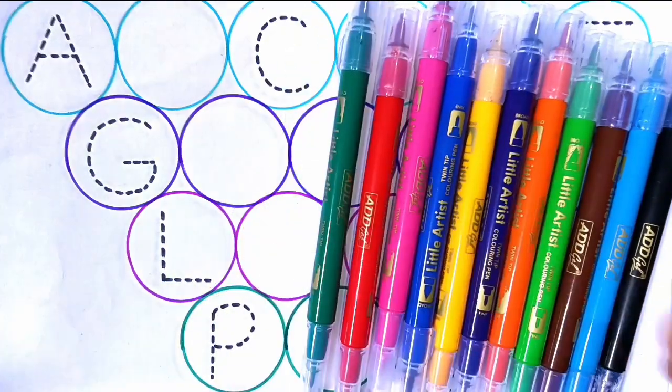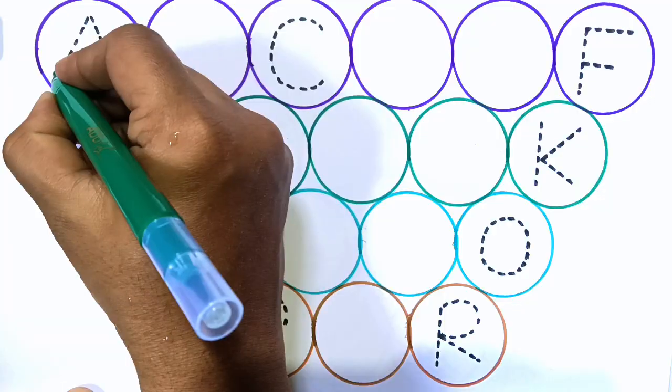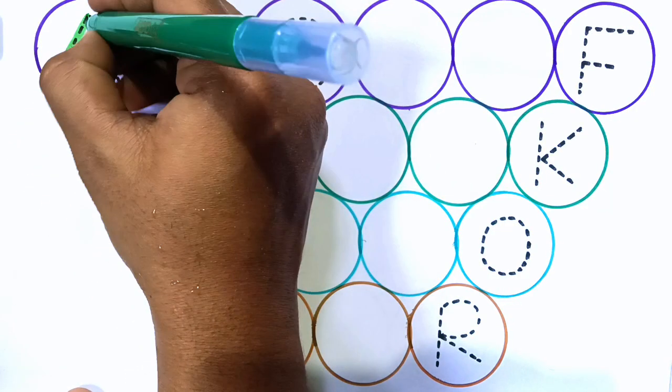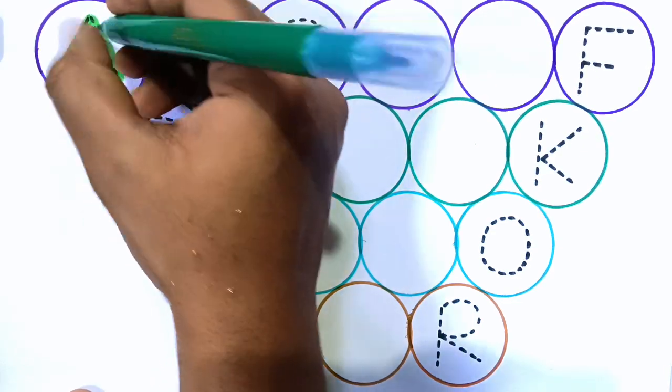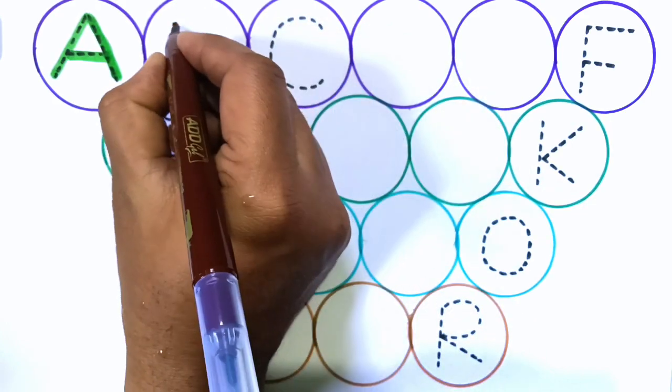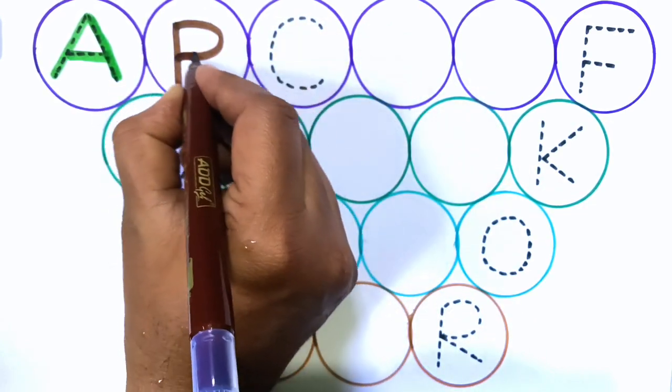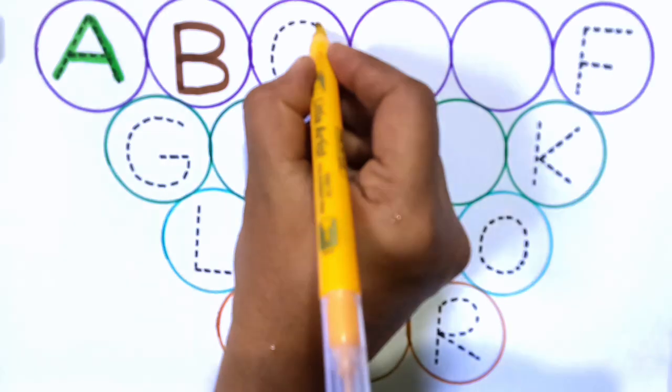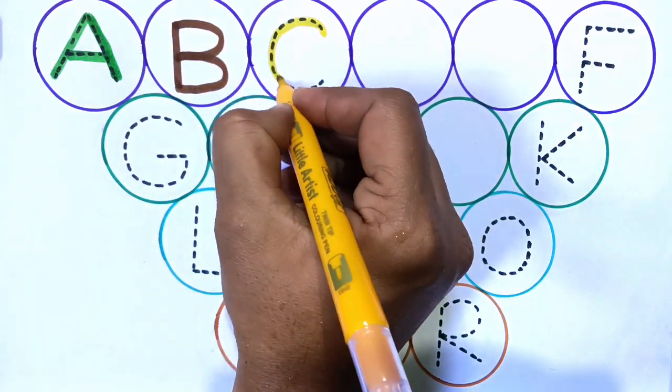Dark green color. A. A for apple. B. B for ball. C. C for cat.